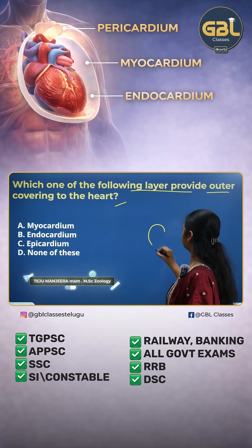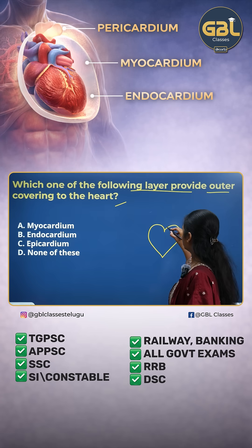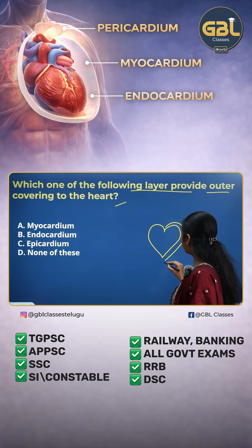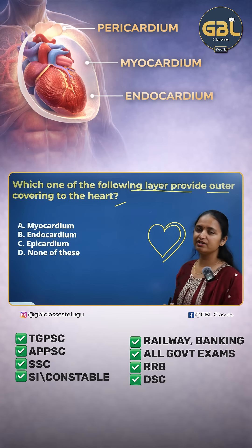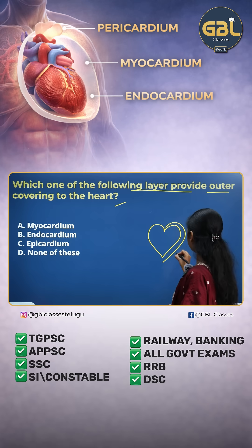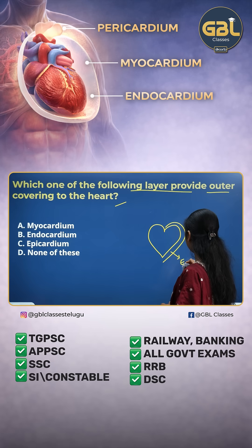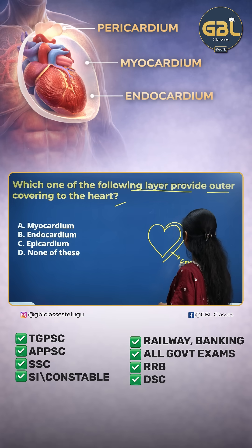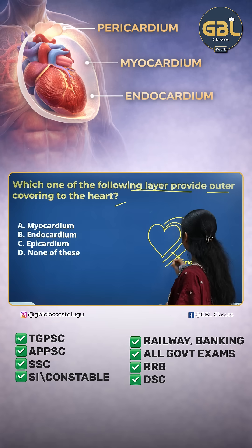If suppose this is a rough structure of the heart, the one which covers the inner surface or which is in direct touch with the heart is the endocardium. The middle layer of the heart, which is in between endo and epi, will be meso.